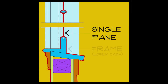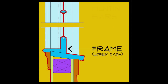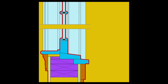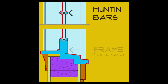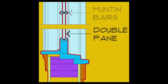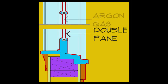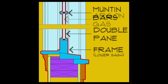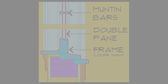Historically, a single pane window has a frame and muntin bars that hold individual panes of glass. Today's windows tend to have decorative muntin bars with at least two larger panels of glass, plus gas and coatings added for energy efficiency.